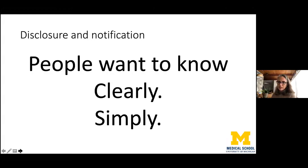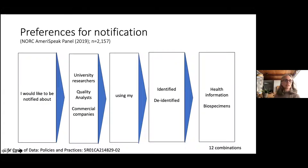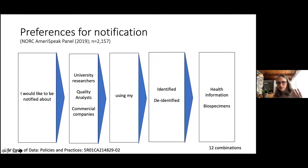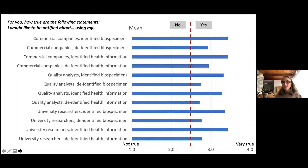This leaves us with disclosure and notification as the next best option. If we can't ask for permission up front, we can let people know. We conducted a nationally representative survey of just over 2,000 people, asking how true it is that they would like to be notified about university researchers, quality analysts, and commercial companies using their identified or de-identified health information or biospecimens — twelve different combinations. For all combinations, responses fell on the side of 'yes, please notify me.' Identified data showed a stronger preference for notification, which isn't surprising.